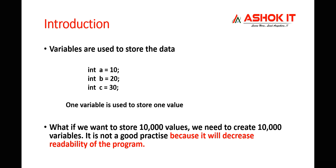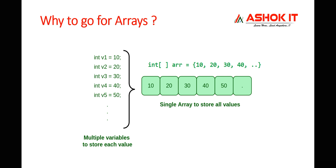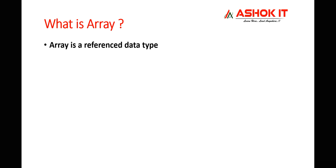Writing 10,000 variables inside a program is not at all recommended — it's not good programming practice because it will decrease readability of the program. That's where arrays come into picture. If you want to store multiple values using 10,000 variables, your program readability will be decreased. That's why we use arrays. An array is used to store multiple values into a single variable.